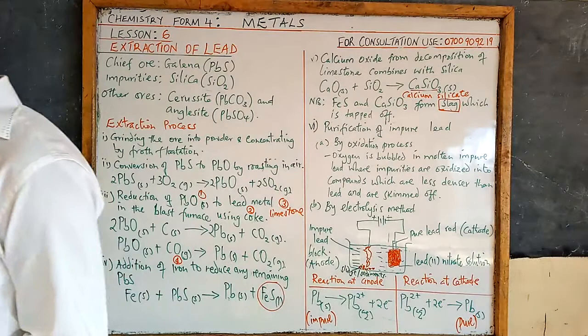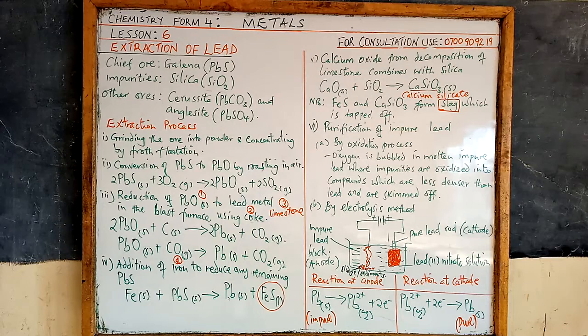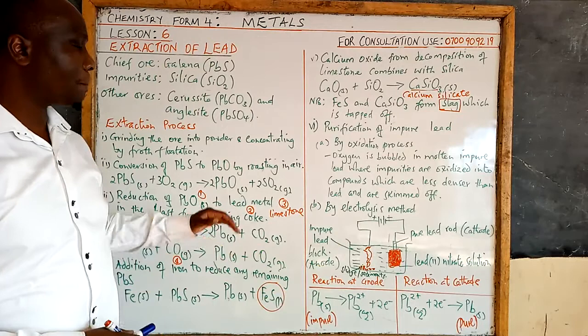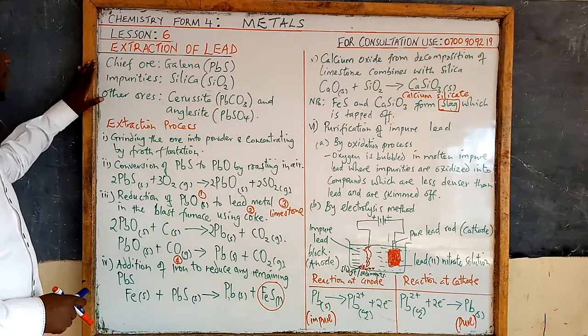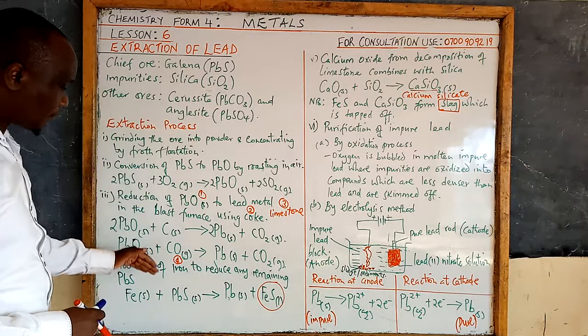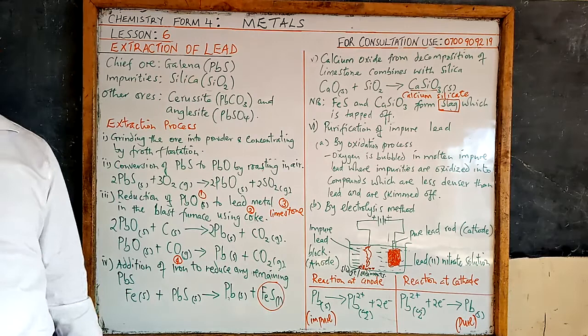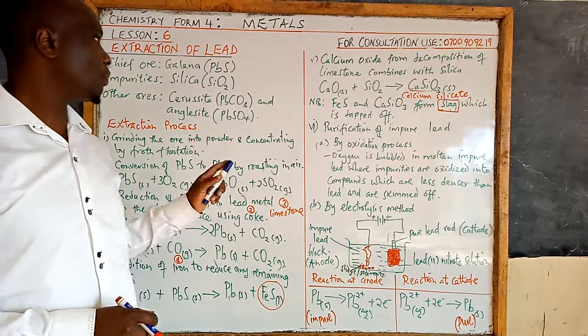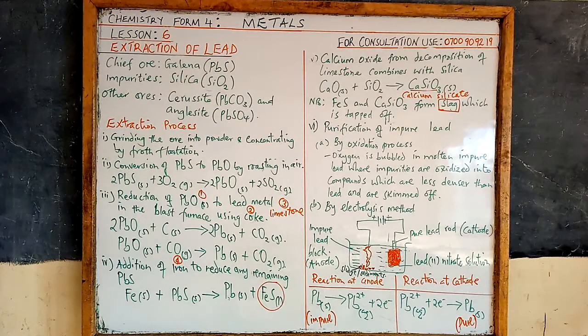In short, that covers the extraction of lead. You can refer to the notes for more explanation and do as many revision questions as possible. With metals you need to revise a lot. The key areas include the chief ore, the impurities, and other ores. The blast furnace for extraction of lead is very similar to the extraction of iron. So up next, let's discuss extraction of copper.